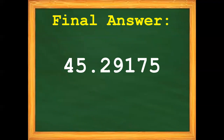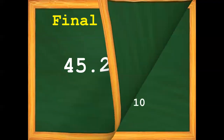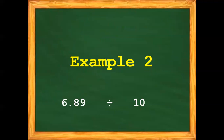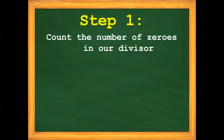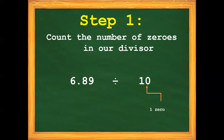Let's proceed with our second example. We have 6 and 89 hundredths divided by 10. Step number 1: count the number of zeros in our divisor. Our divisor is 10, so we only have 1 zero.